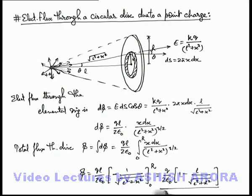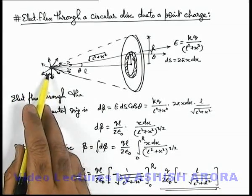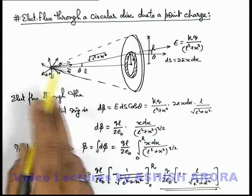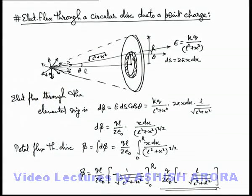In coming sections we'll study that by using the concept of solid angle, this result can be obtained just in one step by uniform distribution of flux in the surrounding of a charge in the overall solid angle. So we'll take it up in the coming section, another alternative way to calculate the same result.